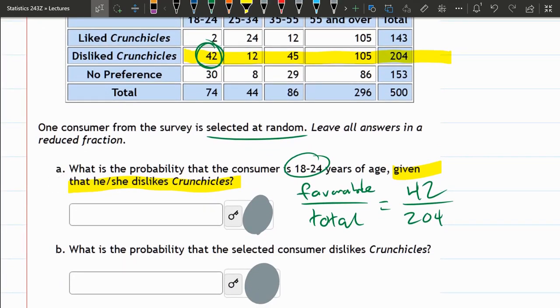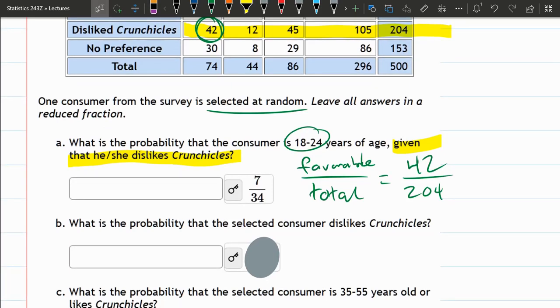We're ready for part B. That'll be the reduced version. Part B, probability the selected consumer dislikes Crunchies. You have to ignore everything in part A, because part B is totally separate. So I'm going to reread these instructions. One consumer is selected at random. What's the probability that the randomly selected consumer dislikes Crunchies?